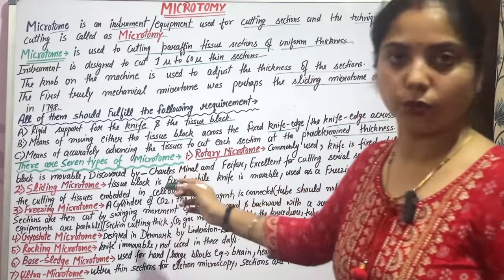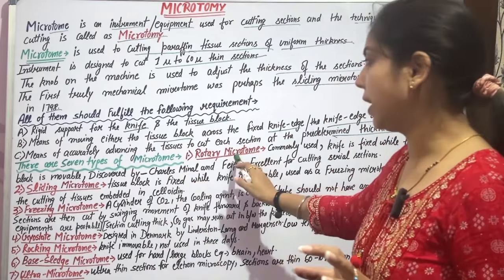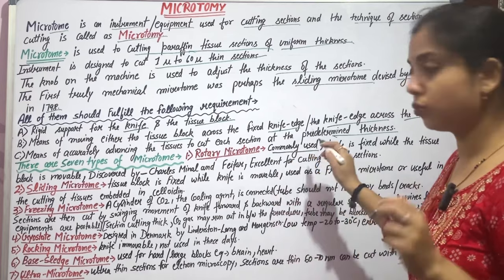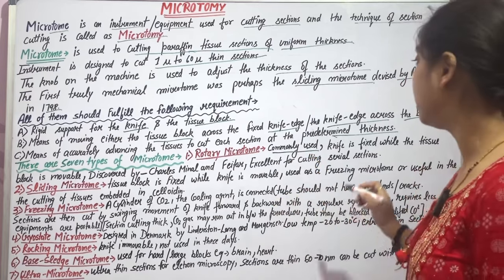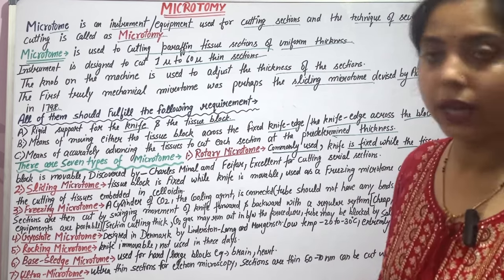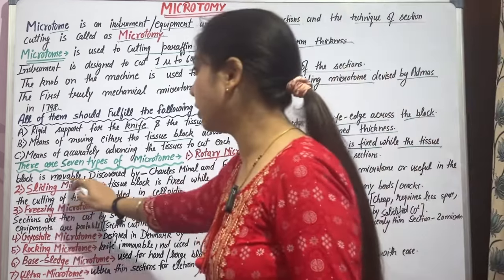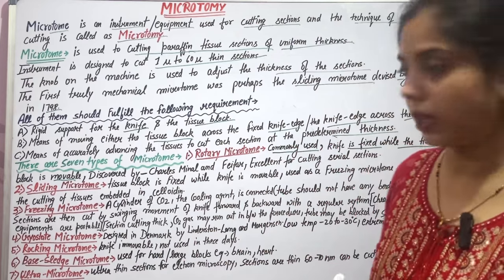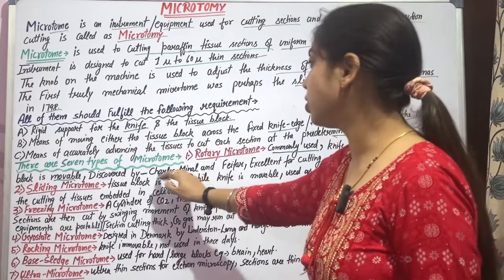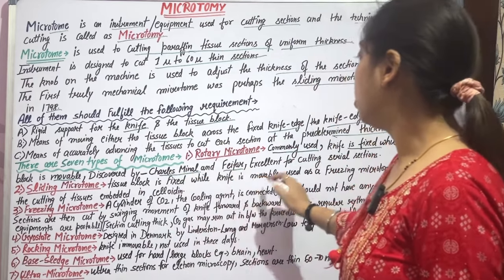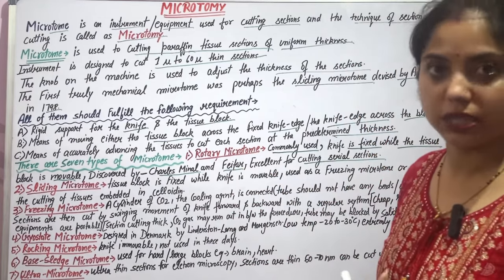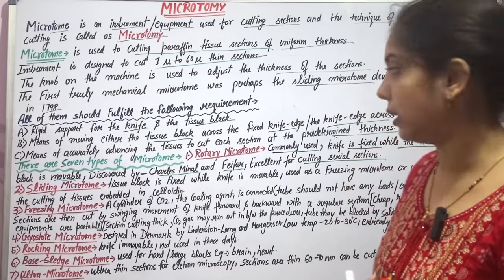There are seven types of microtome. The first is the rotary microtome, which is commonly used in histopathology labs. The knife is fixed when cutting and the block is moved. It was discovered by Charles, Minel and Fitter. Serial cutting is very good with this type.